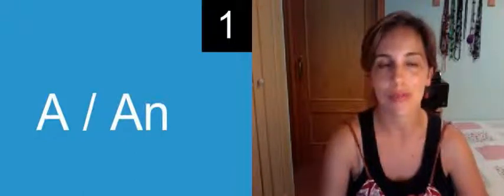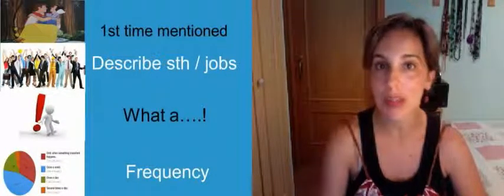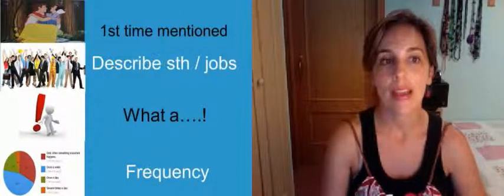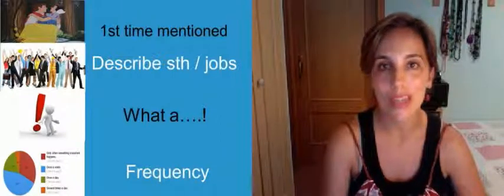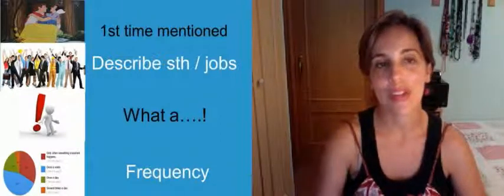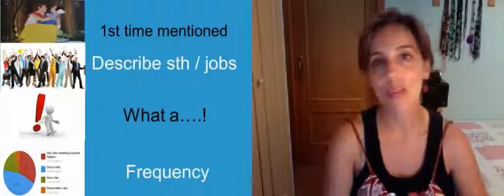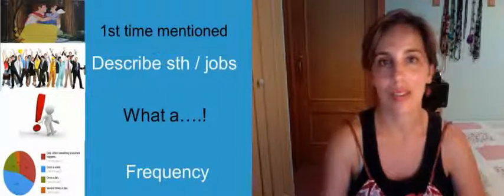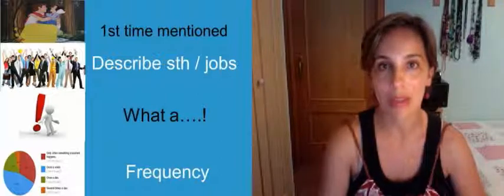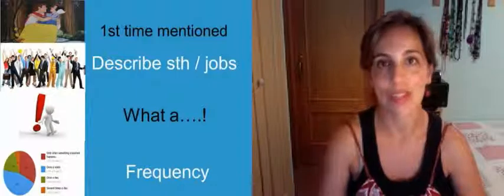In what situations do we use a and not the or the zero article? For example, when we are mentioning something for the first time, we always start with a. It's a typical example in a story for little children. You're reading the Snow White story and you say, in this story there was a woman, or there was a prince, there was a queen. So you say a, because it's the first time that you mention them. Of course, when you continue and it's the second time, we don't say a anymore — we continue with the.